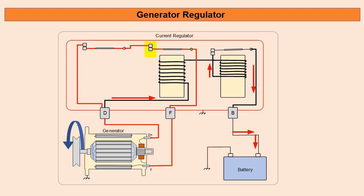You can see here that as the current increases, the magnetic field strength on the current regulator contacts begins to get greater. So the moment that the current reaches a predetermined point, the current regulator contacts open and that reduces the output of the generator.